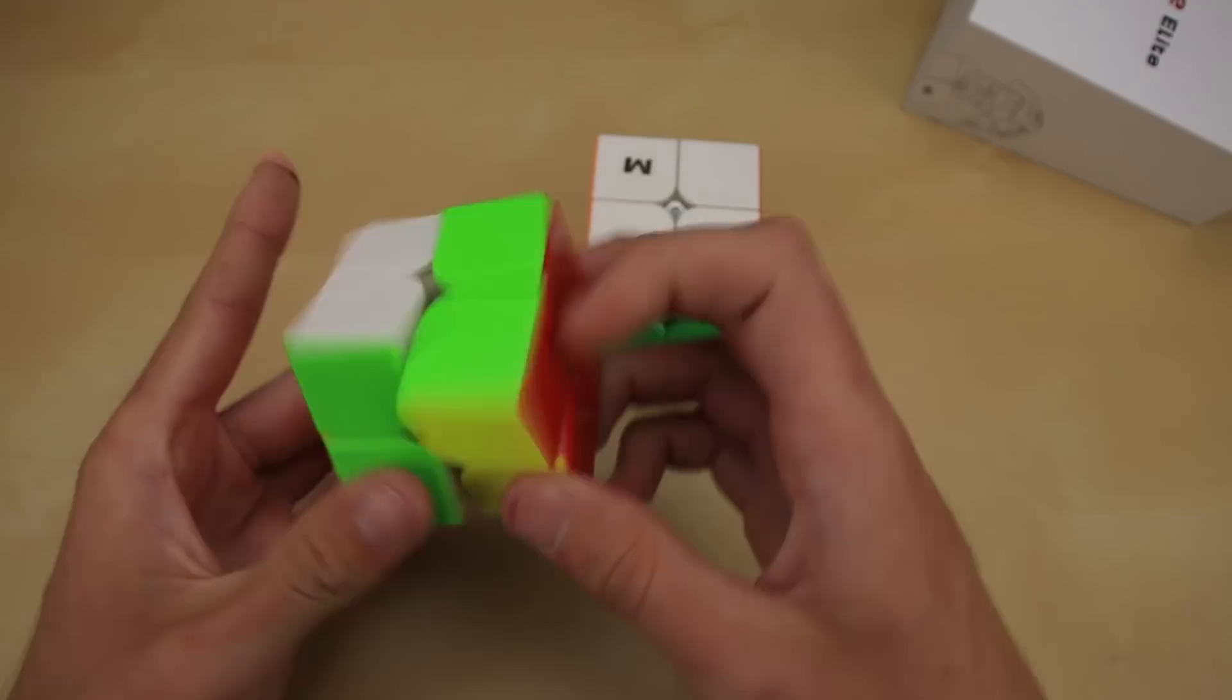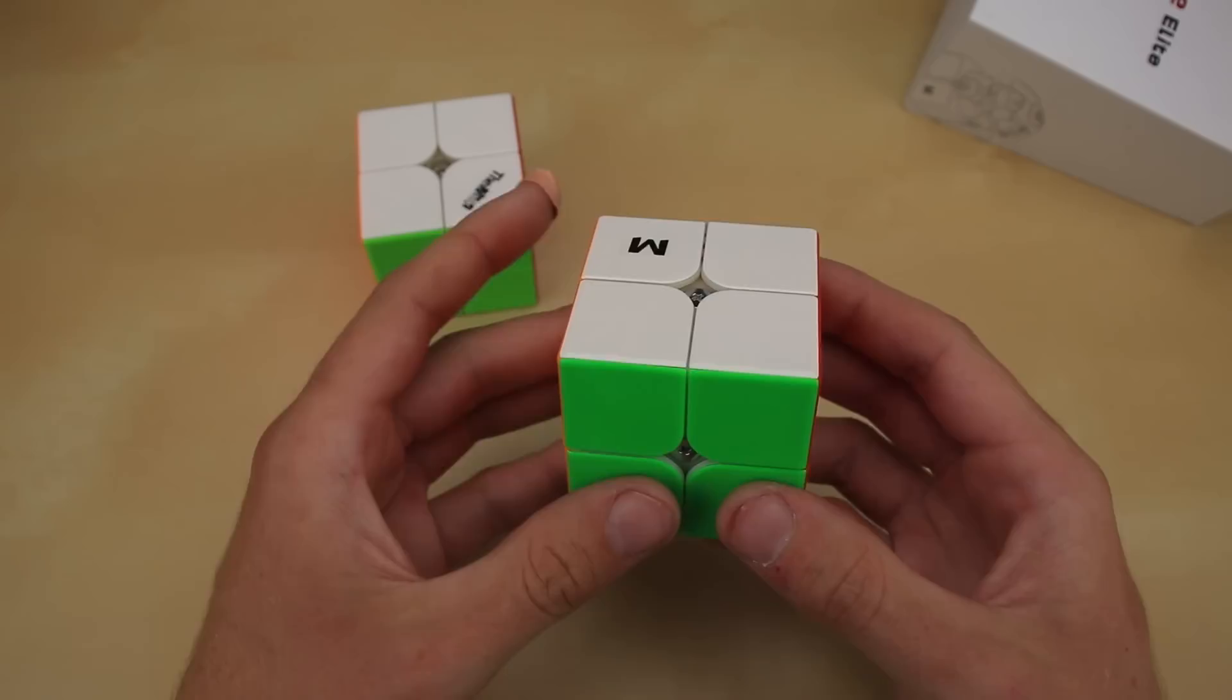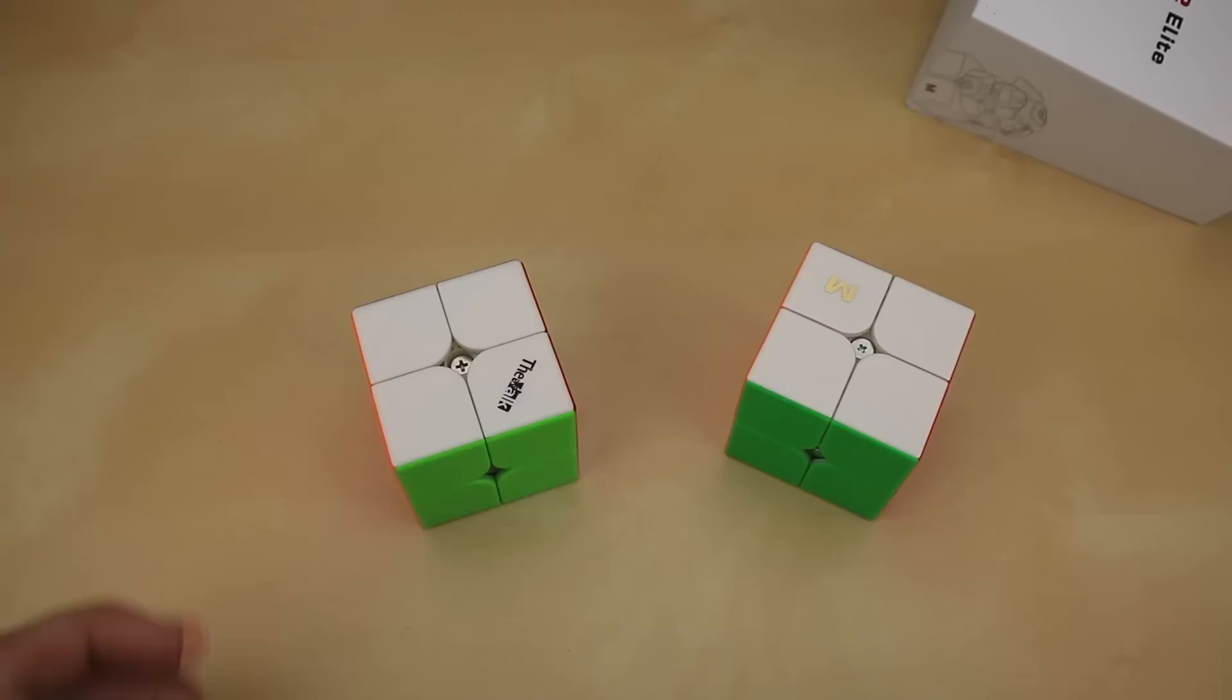Definitely very comparable to my current main, the Valk 2. Overall out of the box it does seem very dry, so you definitely want to do some lubing at first in order to get the maximum possible speed cubing performance out of it. But overall, even without being able to do a full solve at the moment, I can say that it almost definitely stands up to the Valk 2 and I could definitely use it as my main.